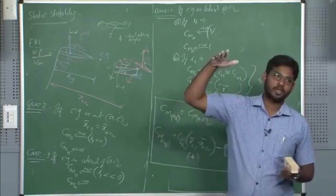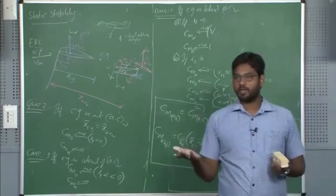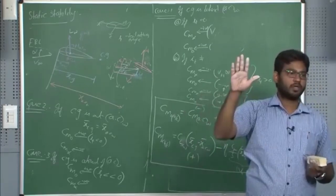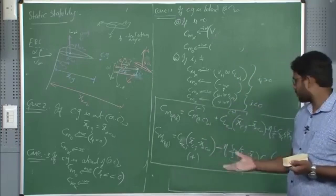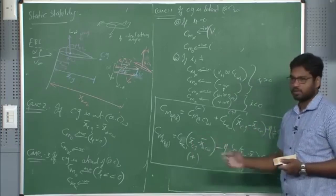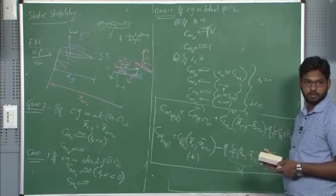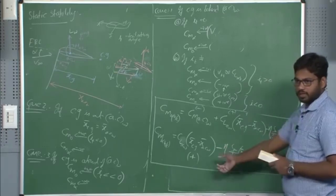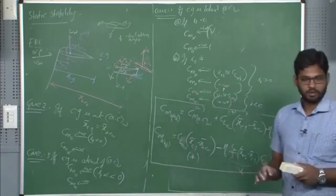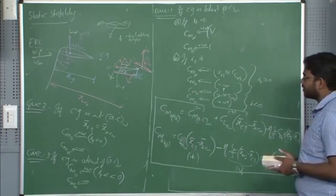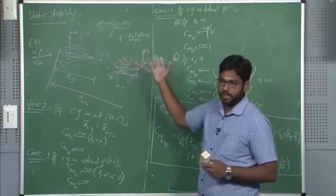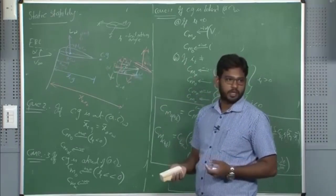We want the aircraft to fly at a particular CL — the design CL — which is controlled by alpha. We want to fly at a particular alpha and do not want the aircraft to adjust to a new equilibrium whenever there is a disturbance. That is neutral stability. The system becomes neutrally stable when CG is brought to the aerodynamic center for this wing-alone configuration — a neutrally stable position where it achieves a new equilibrium at any disturbance.